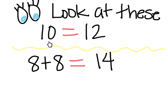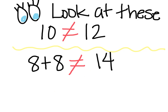Let's look at this: ten is equal to twelve. Is that equal? It is not equal. So I need to put my slash through because ten is not equal to twelve. Let's look at this one: eight plus eight — think in your head the doubles. Eight plus eight is sixteen. This says it's equal to fourteen. Is that true? It sure isn't. So I'm going to make my slash through the equal sign. Now I know this says eight plus eight is not equal to fourteen.